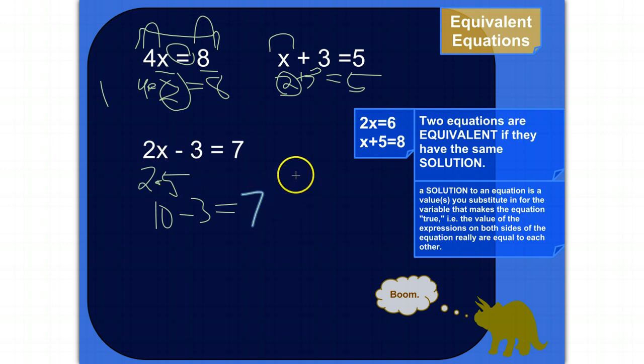If I wanted to come up with an equation that's equivalent, it would just have to be an equation where the solution is 5. So, for example, I don't know, 3x is equal to 15. Well, the only value for x that makes this equation true is 5, because 3 times 5 is actually equal to 15.